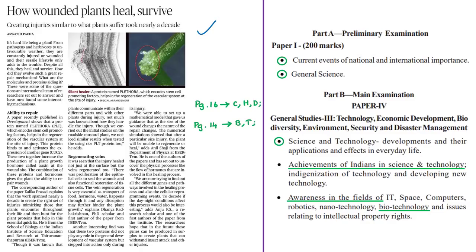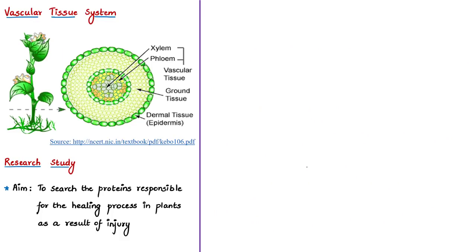This news article discusses a research study with reference to repair mechanisms in a plant. We know that plants are constantly injured or wounded because of various factors — say, for example, unfavorable weather, pathogen attack, or because of herbivores that consume a portion of a plant. Despite these harsh conditions, plants have the capability to heal themselves and survive. The molecules and proteins aiding this process were studied by an international team of researchers.